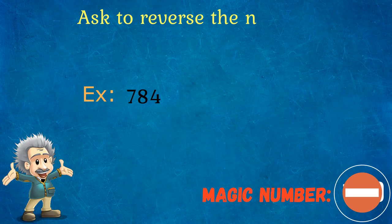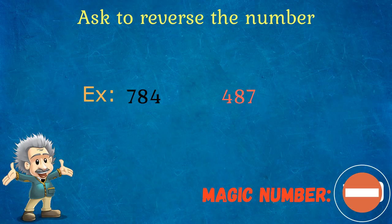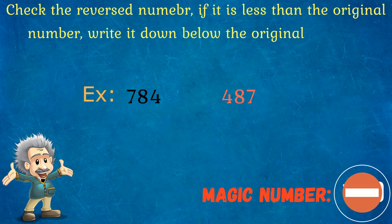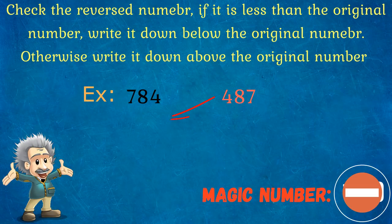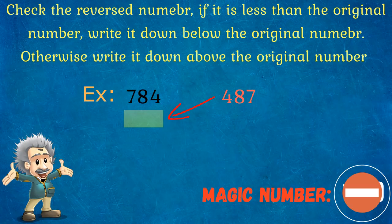As the second step, ask your friend to reverse the number. If that reverse number is less than the original number, you can write it down below the original number. If that reverse number is greater than the original number, you can write it down above the original number.